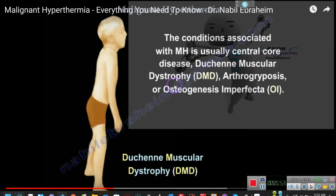Ladies and gentlemen, as you see, the conditions associated with malignant hyperthermia include Duchenne muscular dystrophy — D-M-D. They pronounce it either 'Duchenne' or 'Duchenne.' That's what I've been diagnosed with — that's what the biopsy showed. We have muscular dystrophy, and they thought it was another form at the same time, but it turned out to be something known as myasthenia gravis, another muscular disease.